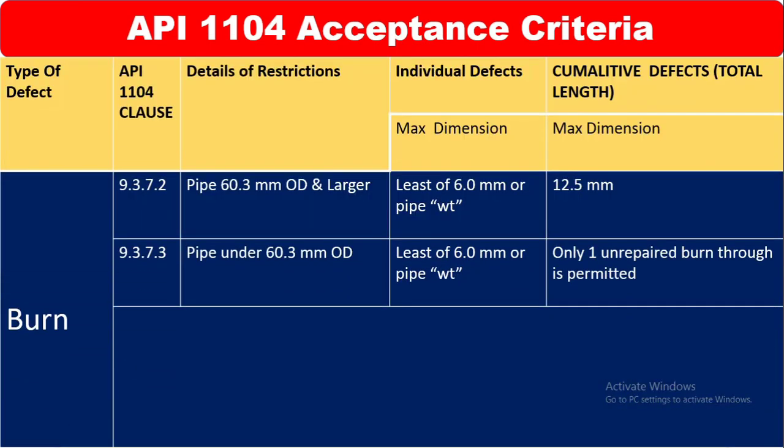Now for types of defects — burn through. Burn through is covered in API 1104 clause 9.3.7.2. For pipe 60.3 mm OD and larger, the individual defect maximum dimension is the least of 6 mm or pipe wall thickness — whichever is less. For cumulative defect, the maximum dimension is 12.5 mm; more than 12.5 mm is not acceptable.